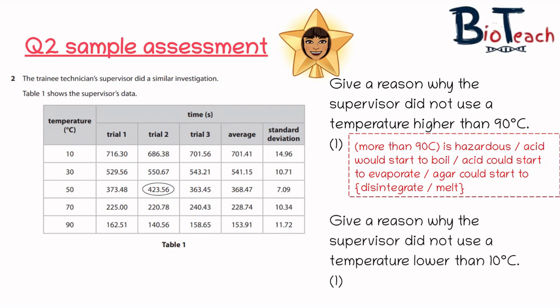The second part of the question asks us to give a reason why the supervisor who did this experiment did not use a temperature lower than 10. It's the same kind of thinking that you need to have - what's the effect of that temperature on the acid or the effect of that temperature on the agar.